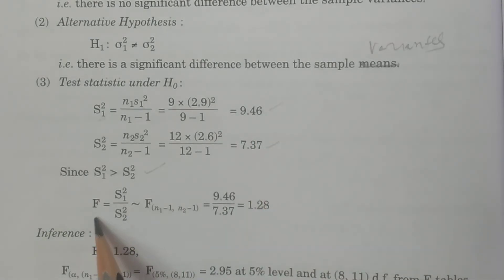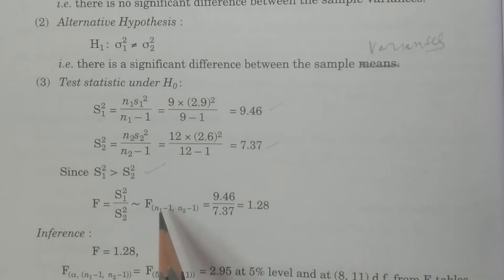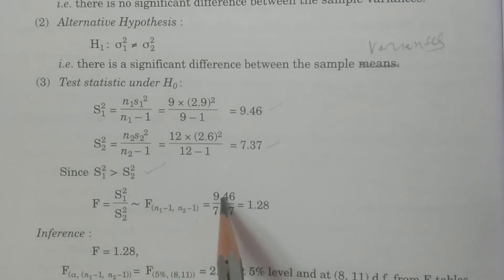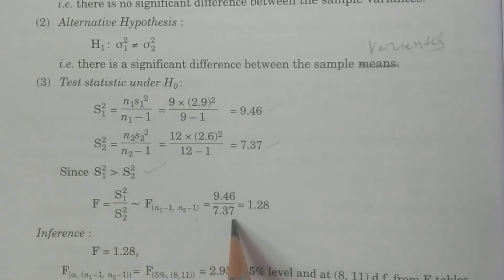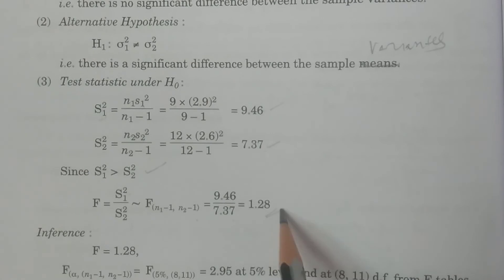Therefore, the test statistic under H₀ is F = S1²/S2², which follows F distribution with (N1 − 1) and (N2 − 1) degrees of freedom. So F = 9.46 divided by 7.37, which gives us 1.28.